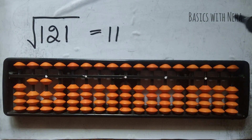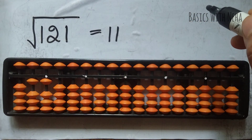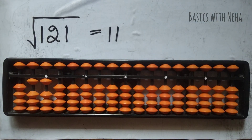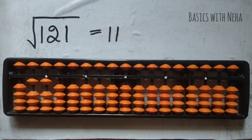When we square 11, 11 times 11 gives us 121. I hope this video was helpful. For more such videos, please subscribe to my channel and support me. We'll see you all in the next video — until then, take care and thank you for watching.